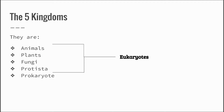There are five kingdoms of living things: plants, animals, fungi, protists, and prokaryotes. Prokaryotes are those living things without a nucleus. Animals, plants, fungi, and protists have a nucleus, and therefore they are called eukaryotes.